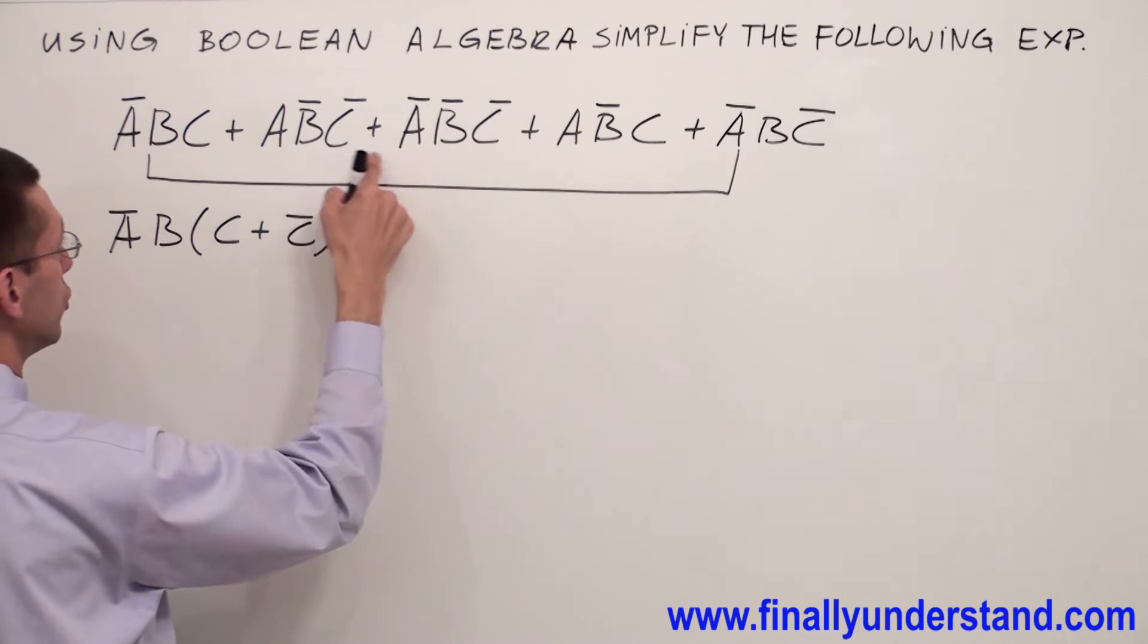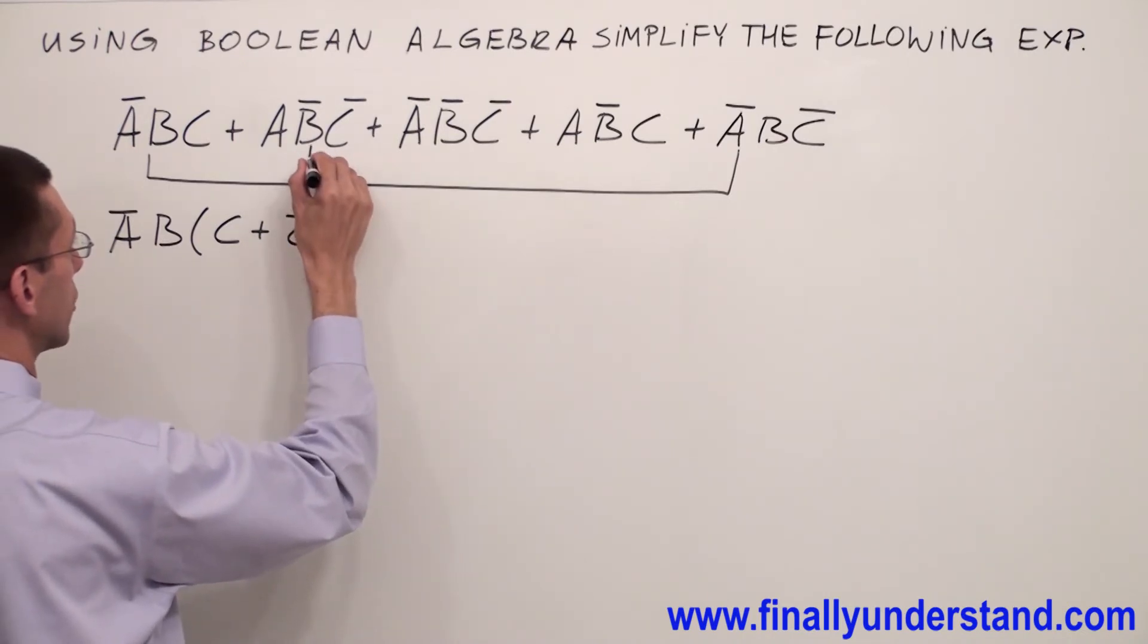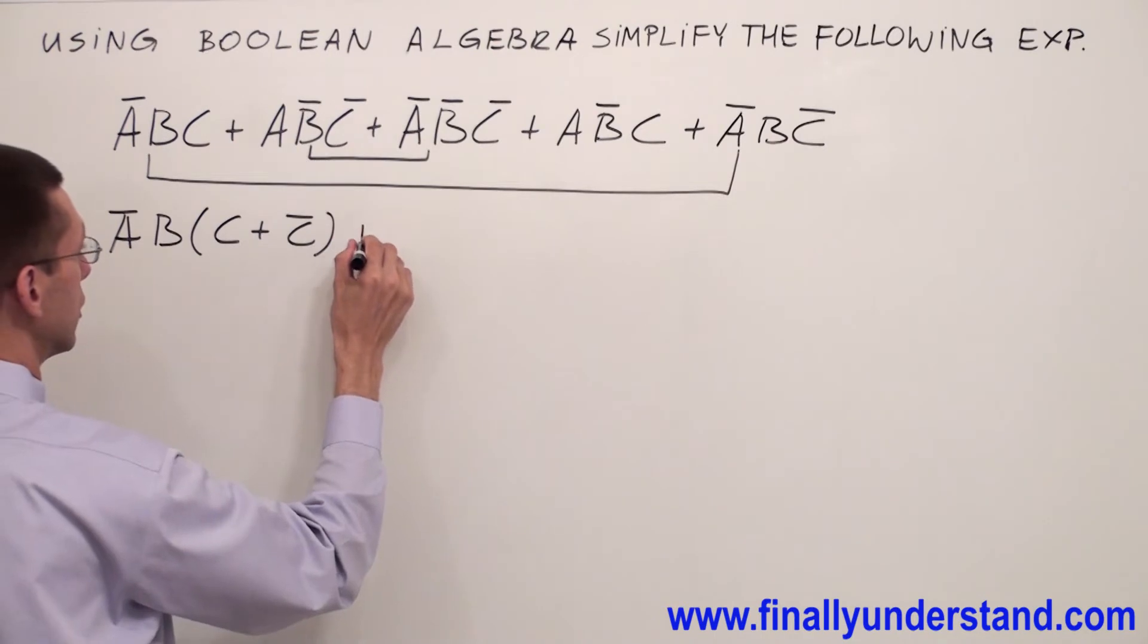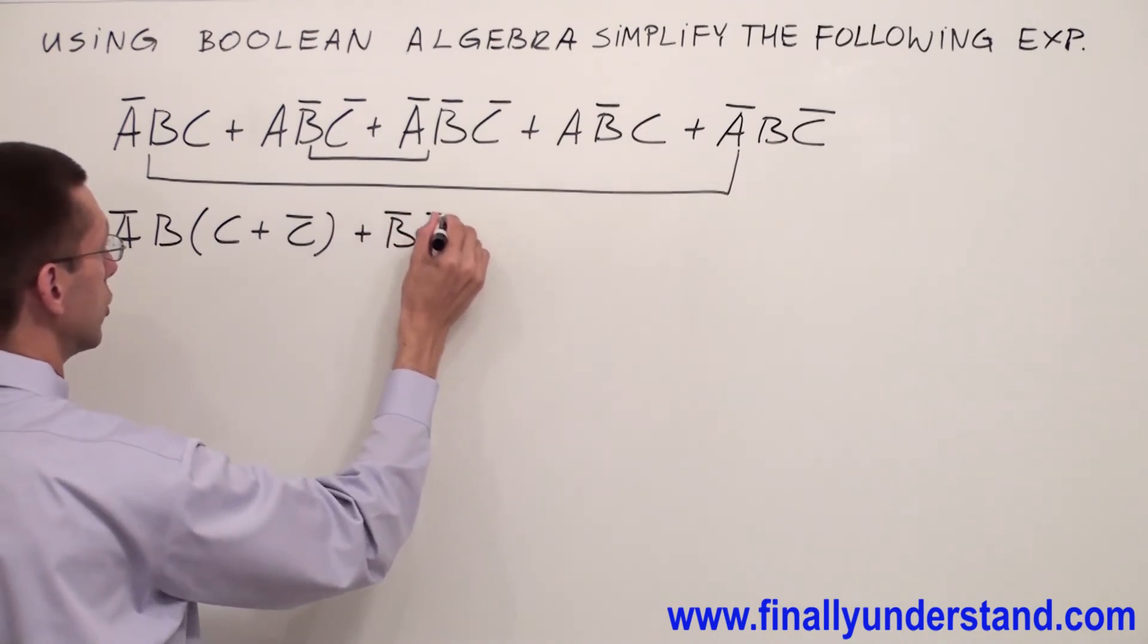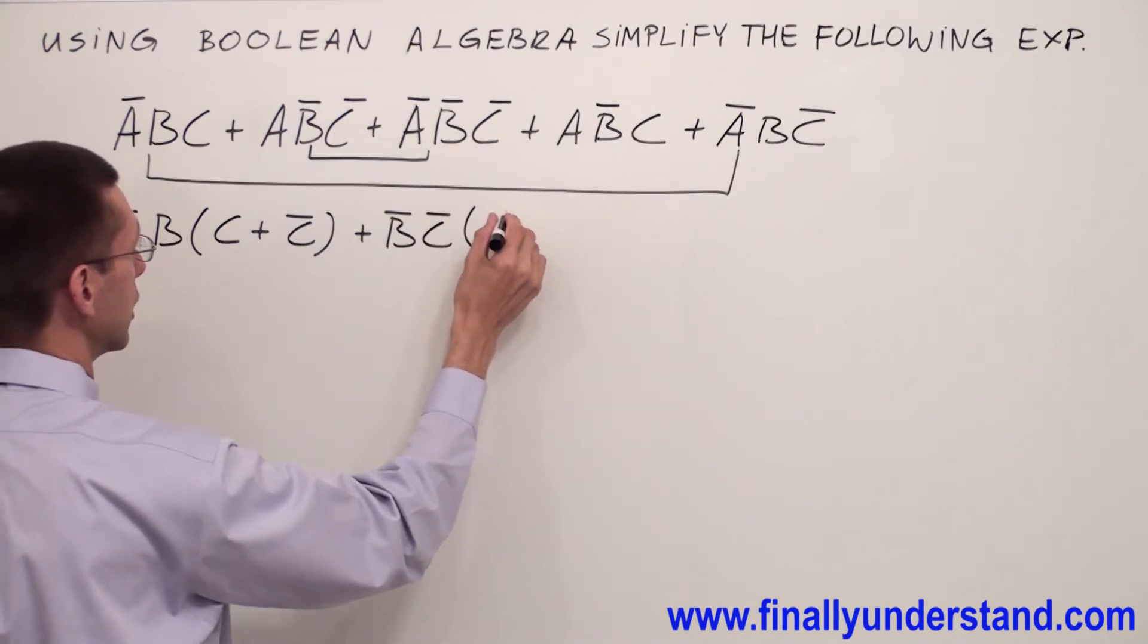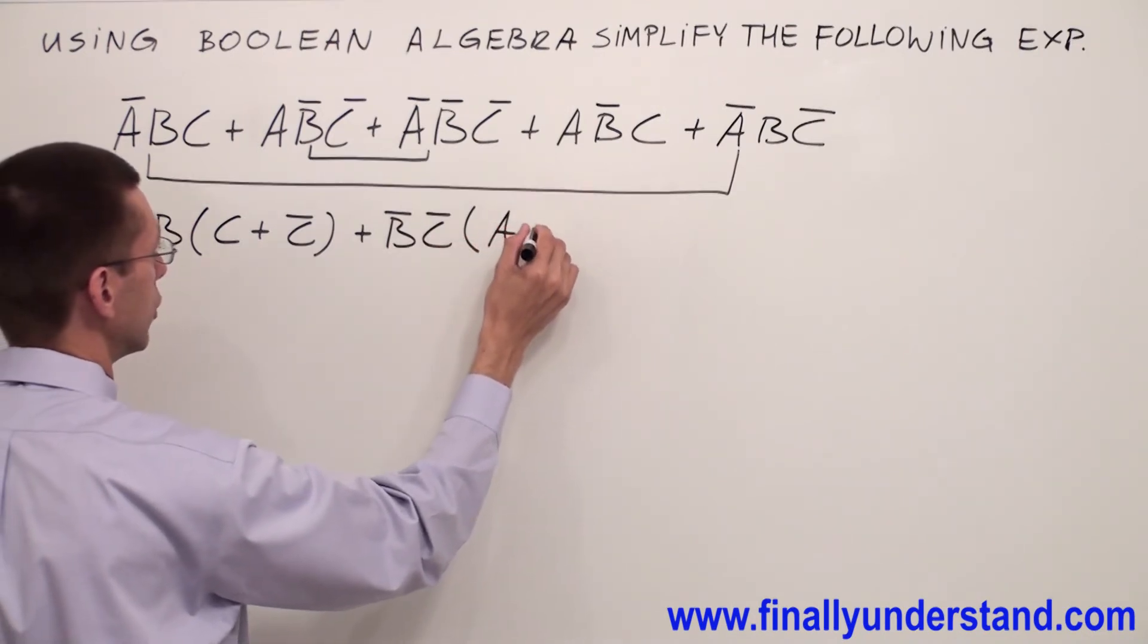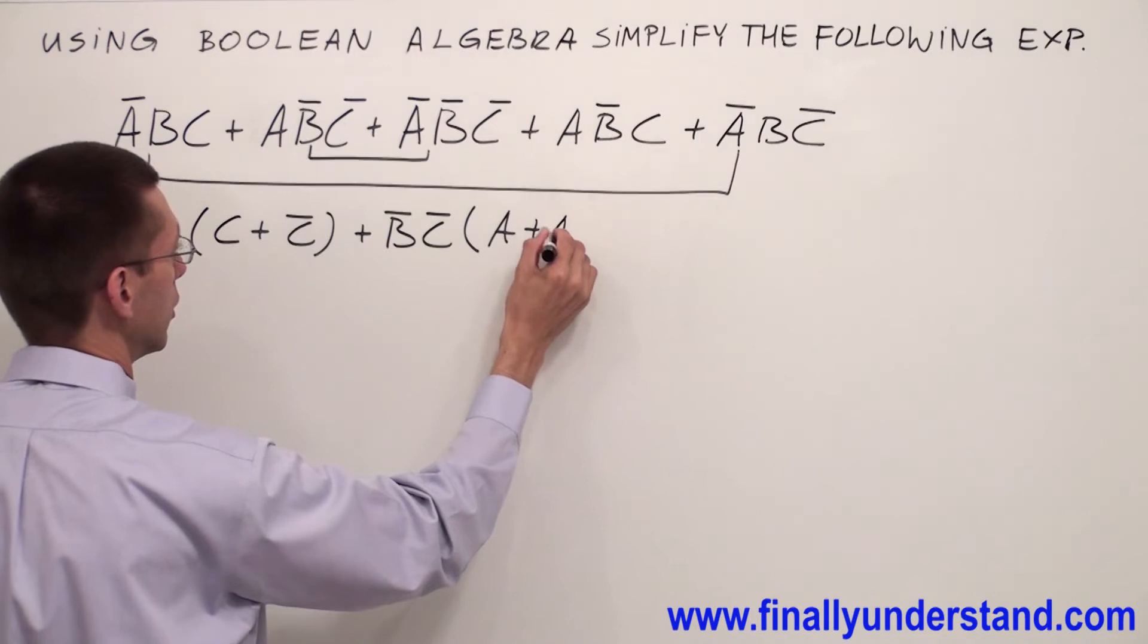From these two terms I can factorize B', C'. That's why I'm going to have B', C' and inside of the parentheses I'm going to have A or A'.